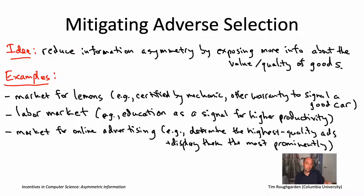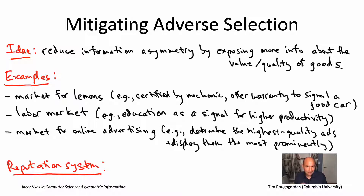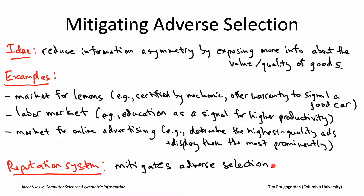What I want to do for the last part of this module is segue into a discussion of reputation systems, which are obviously super relevant for the kinds of markets we're talking about — the ones that have shown up in the 21st century because of advances in computer science. You're all familiar with reputation systems, whether on Amazon or other websites. And now that we've discussed adverse selection, we can actually recognize that one of the points of a reputation system is, in fact, to mitigate adverse selection. So why is that? Why do reputation systems help with adverse selection? Well, it's because they expose additional information.